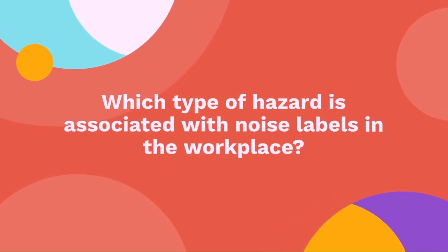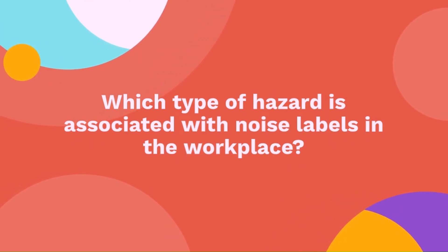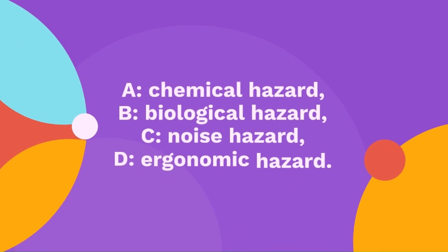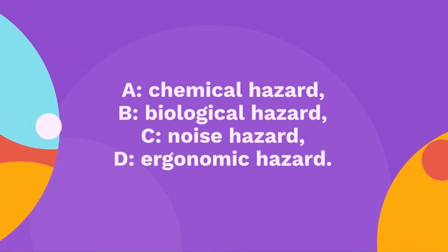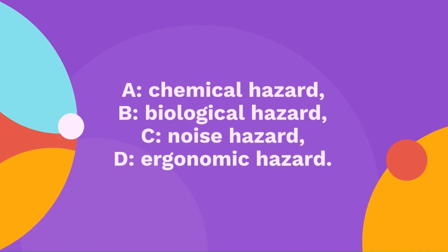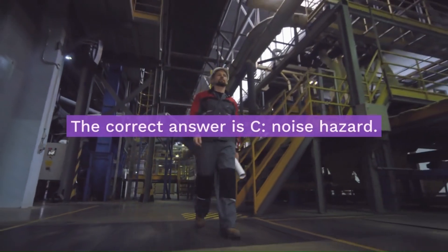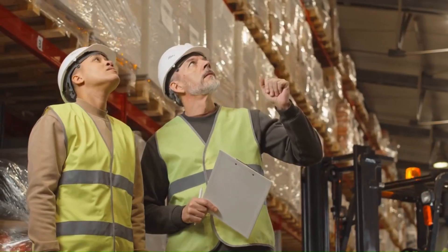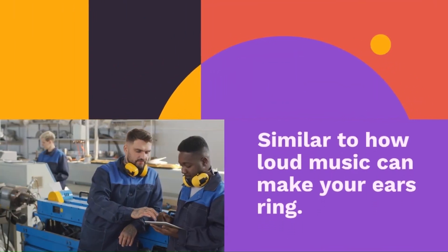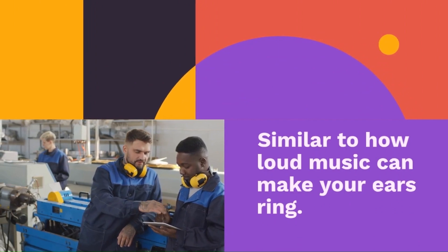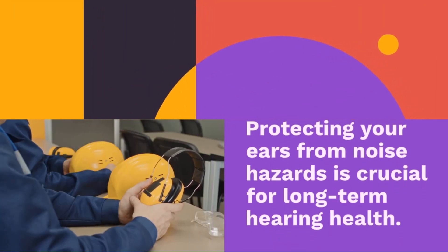Question 19: Which type of hazard is associated with noise levels in the workplace? A — chemical hazard, B — biological hazard, C — noise hazard, or D — ergonomic hazard. The correct answer is noise hazard. Noise hazards come from loud environments that can cause damage to your hearing, similar to how loud music can make your ears ring. Protecting your ears from noise hazards is crucial for long-term hearing health.